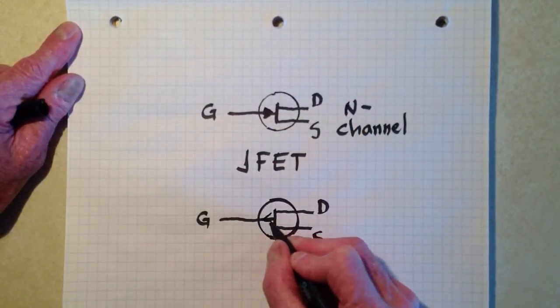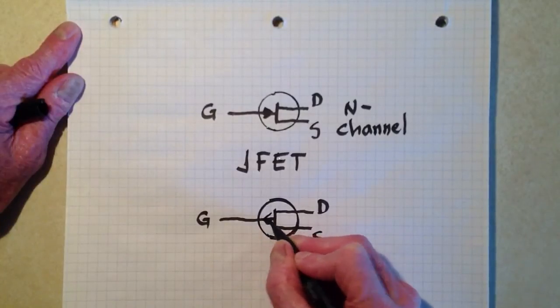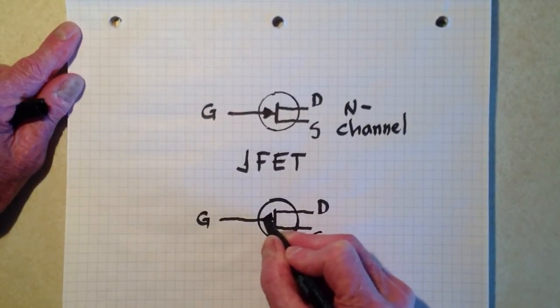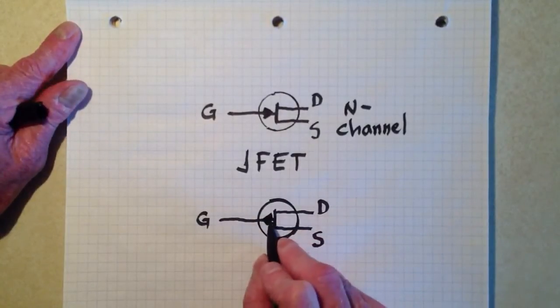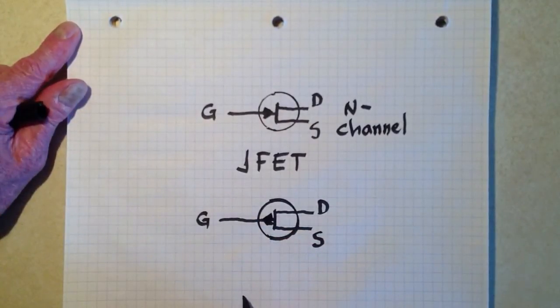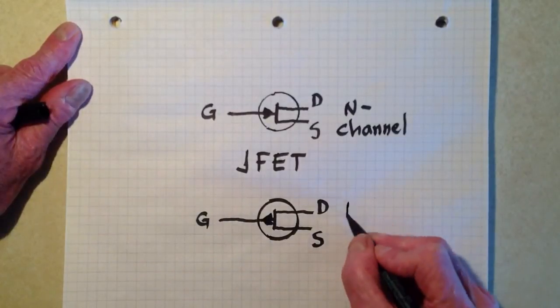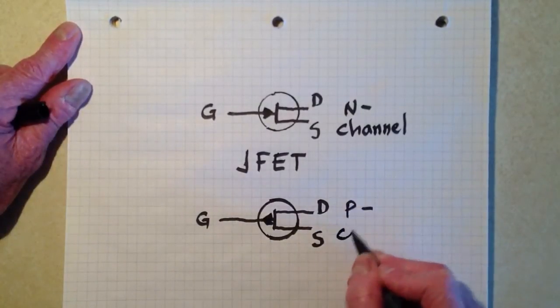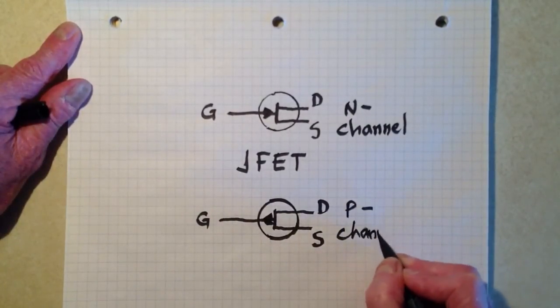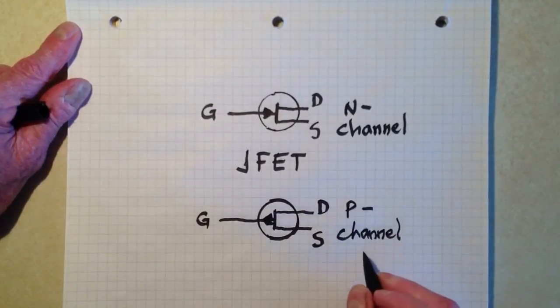Contrary-wise, you can have a P-channel JFET. I'm having difficulty drawing these arrows, but that's supposed to be an arrow pointing out. Does it look like an arrow pointing out to you? Well, me neither. But I gave it the best try I could give it.